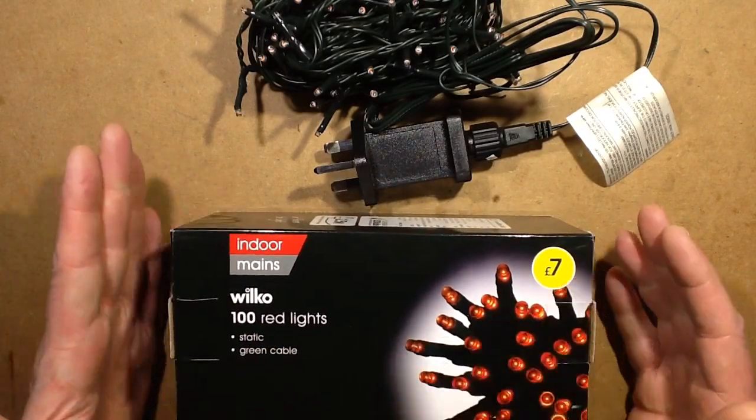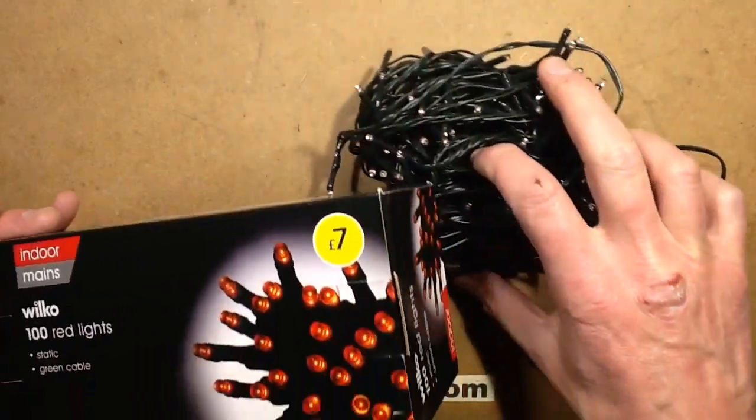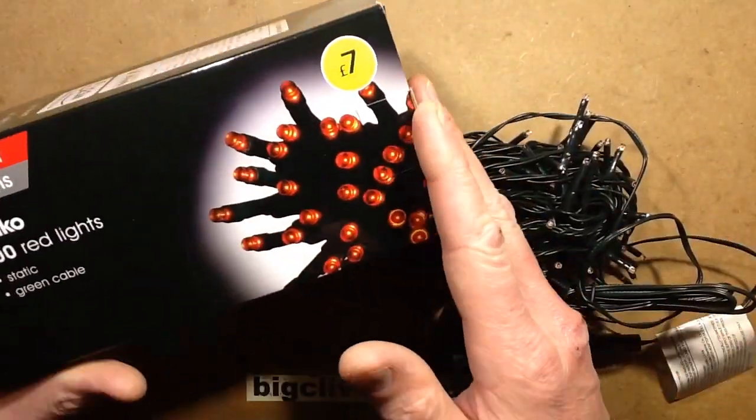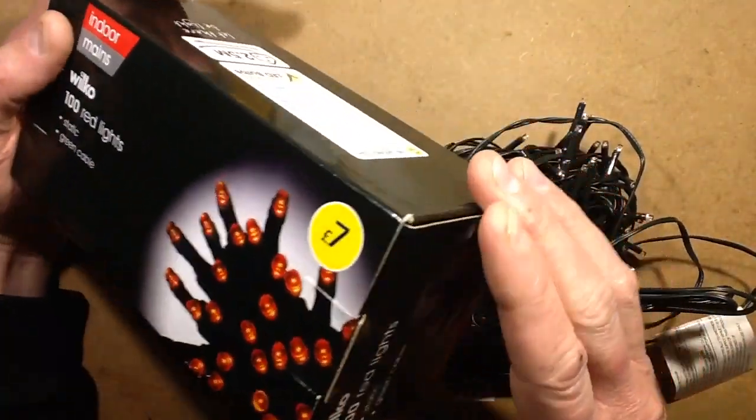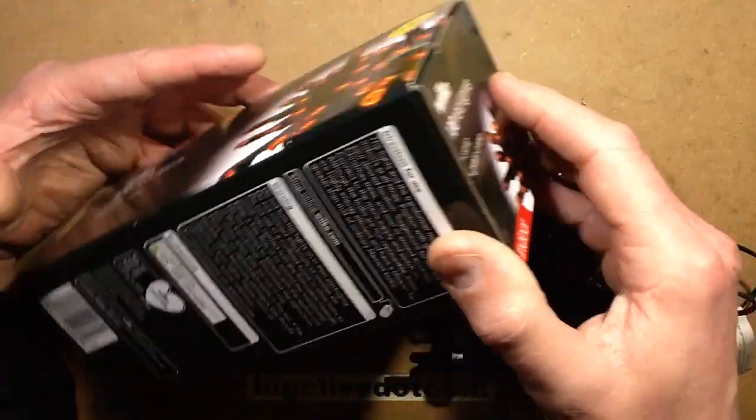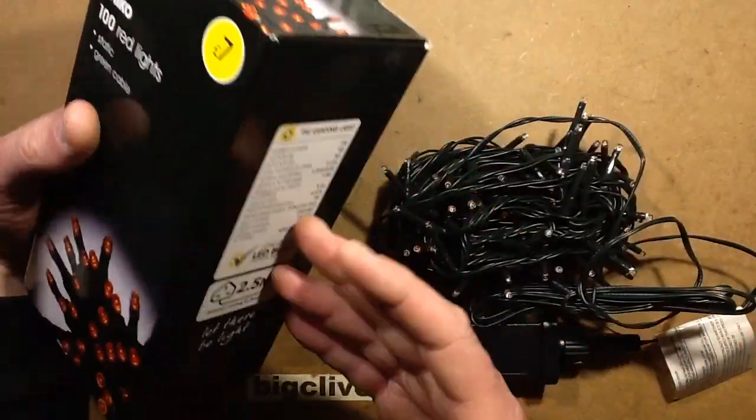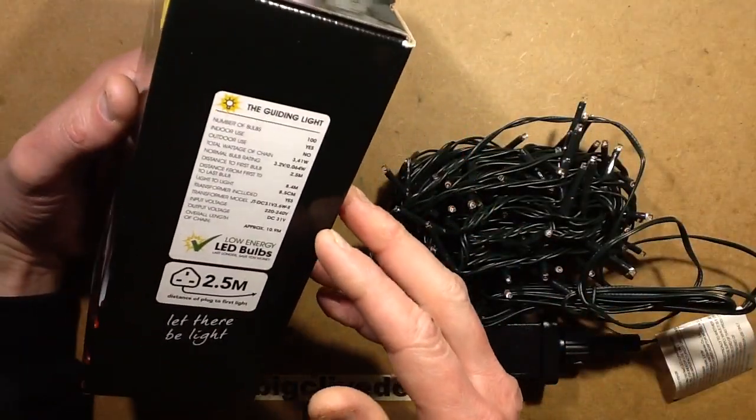And here they are, it's 100 red LED lights, and what really got my interest here was, because it was a sealed box and I didn't want to start opening it in the shop, it was quoting the usual arrangement of the 31 volt power supply, and saying that LEDs are 3.2 volt, and it made me wonder,